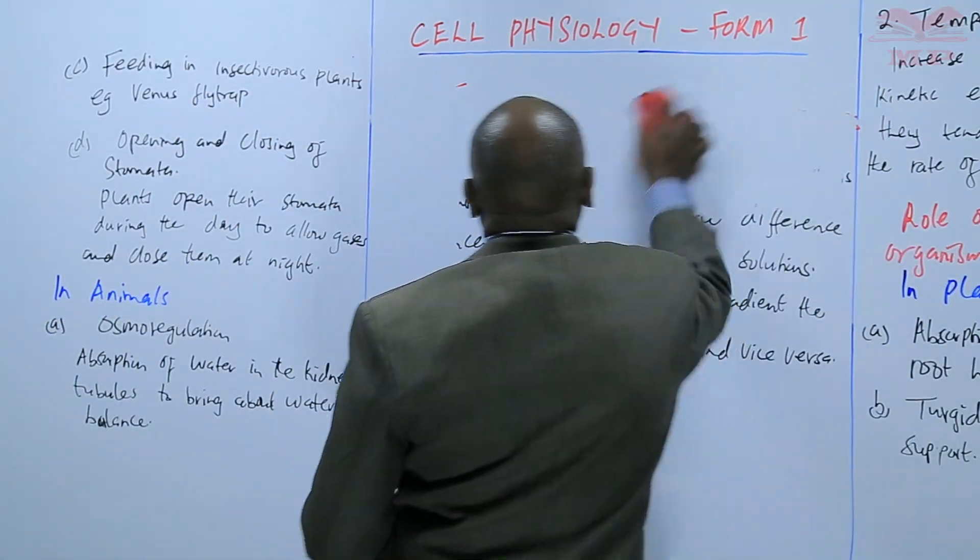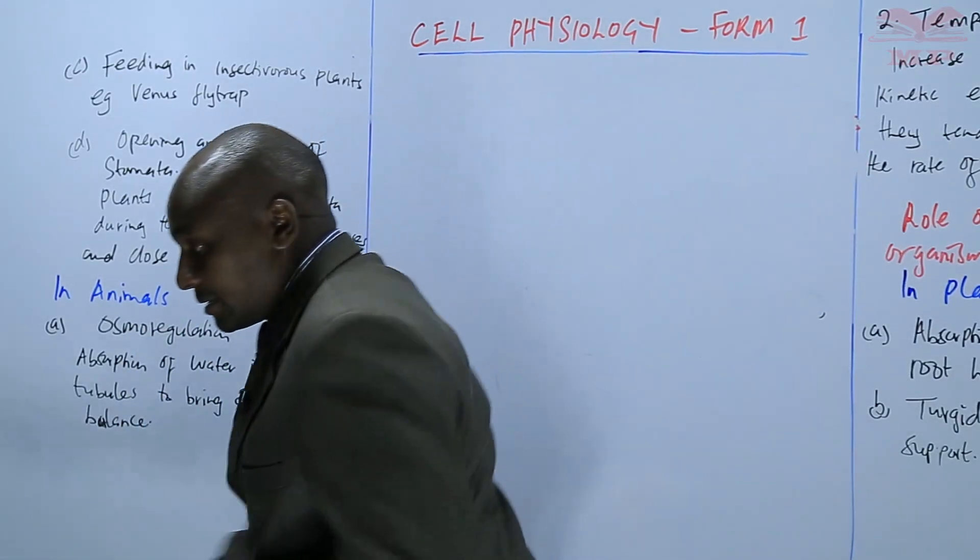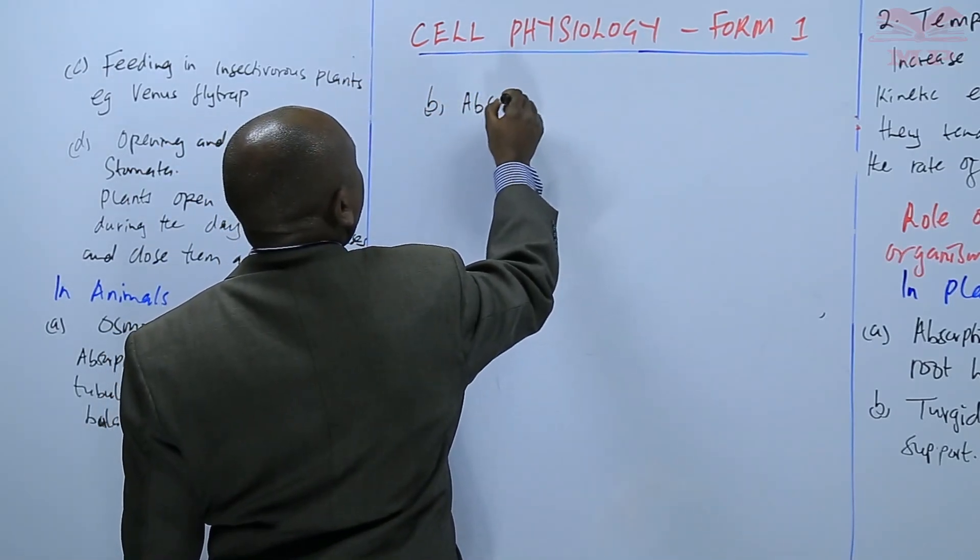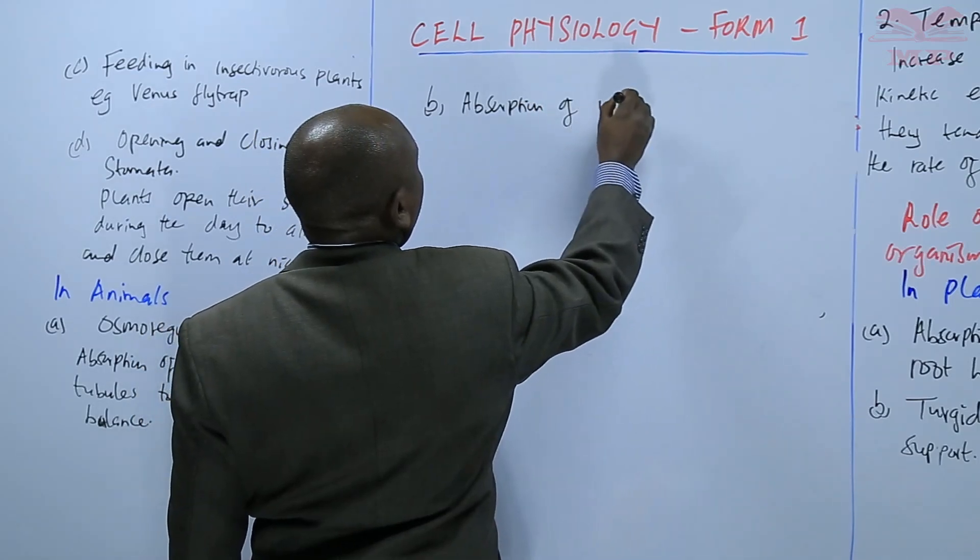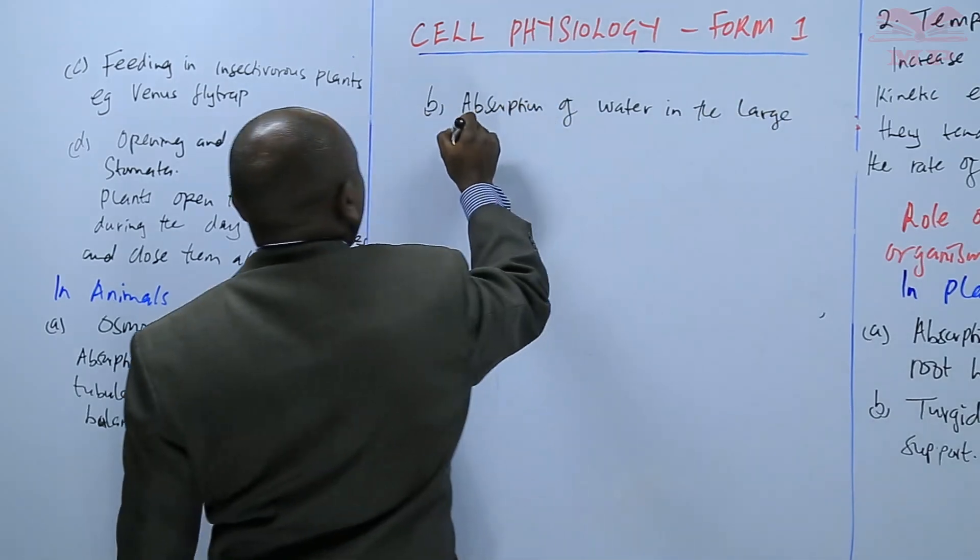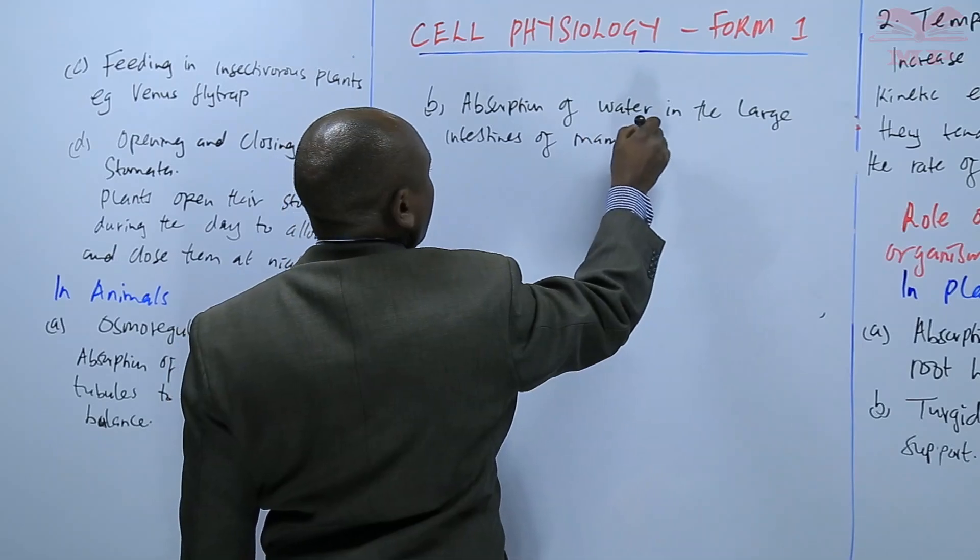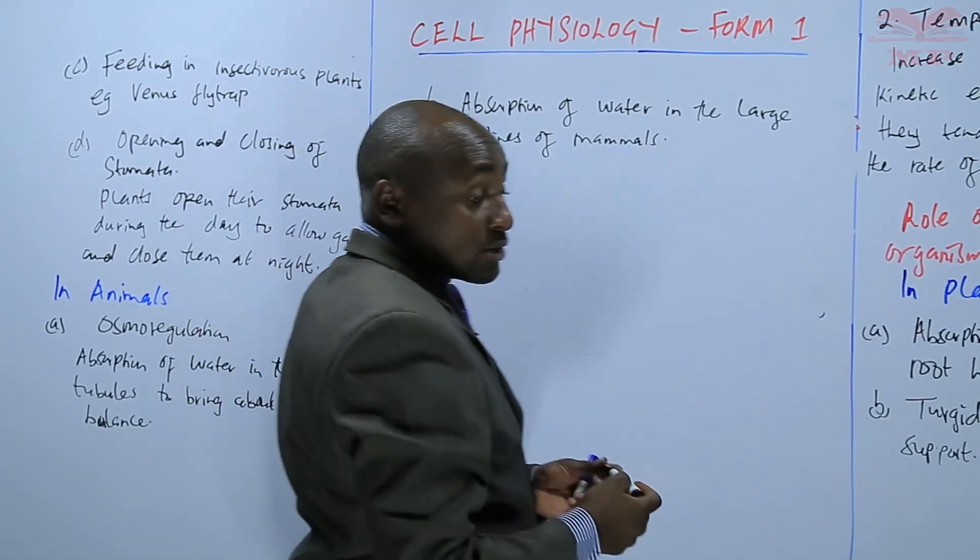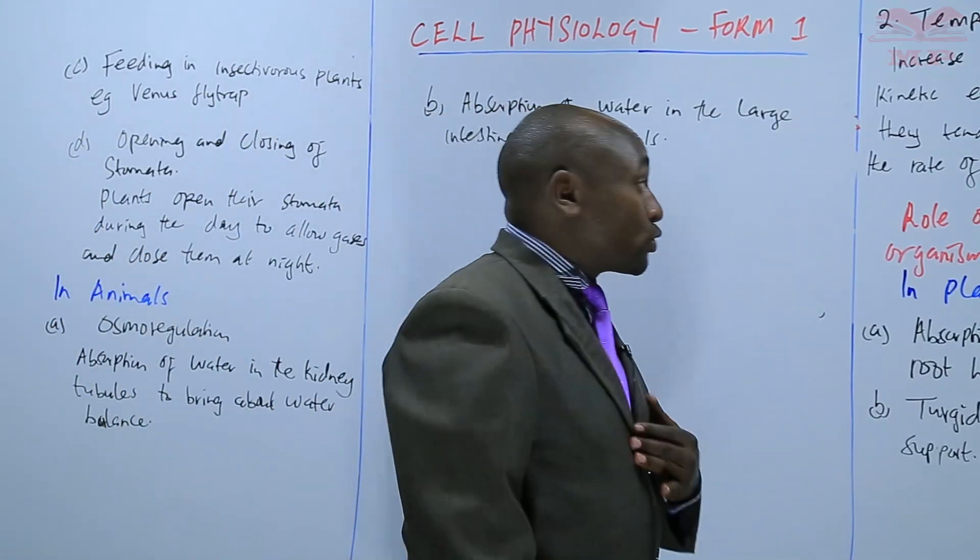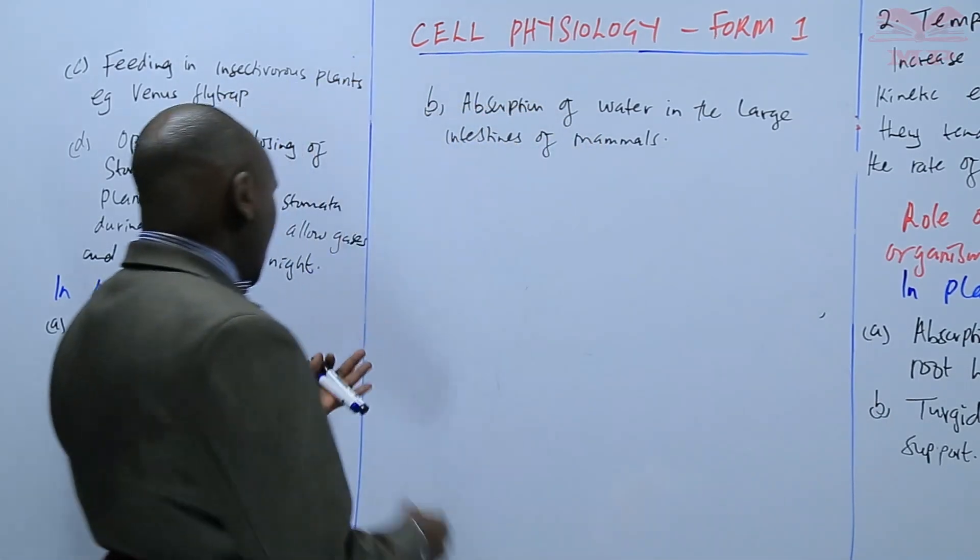Another role that is in animals is absorption of water in the large intestines, in the large intestines of mammals. That one also applies osmosis. So, basically, those are the roles in which osmosis is applied in living organisms, that is in plants and also in animals.